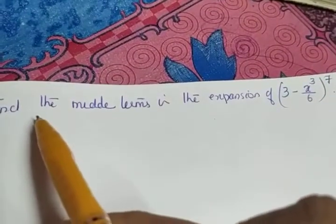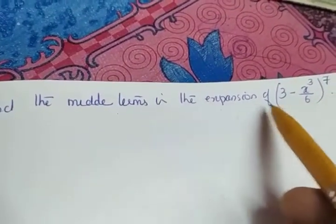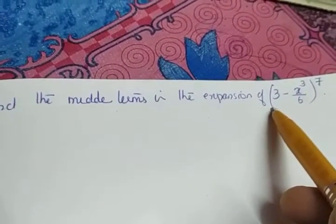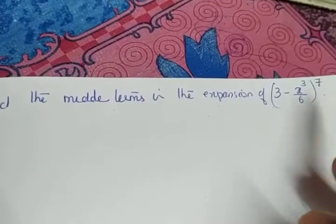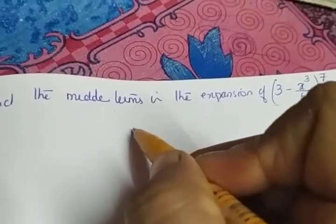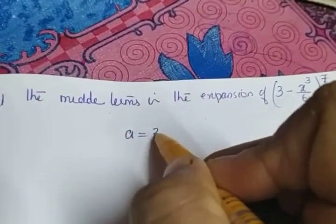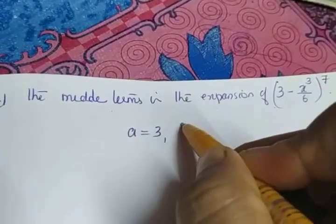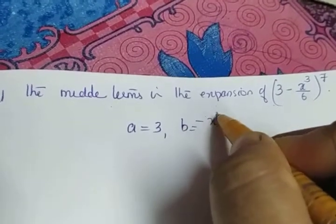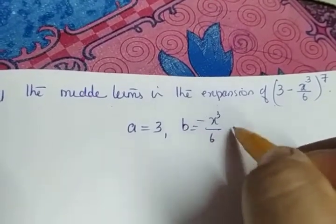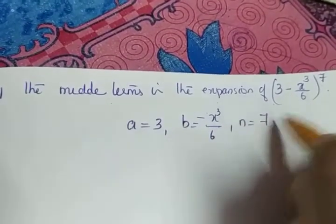The next question: find the middle terms in the expansion of (3 minus x cube by 6), the whole raised to 7. We will write the values: a is equal to 3, b is equal to minus x cube by 6, and n is equal to 7.